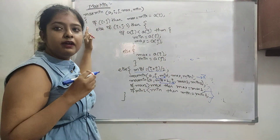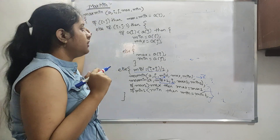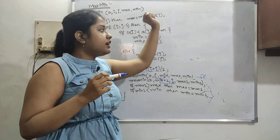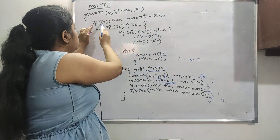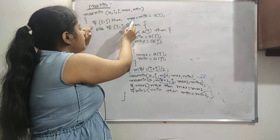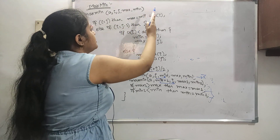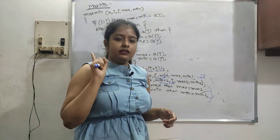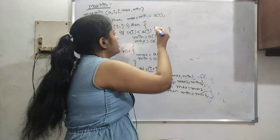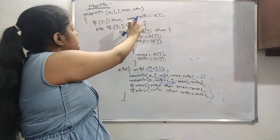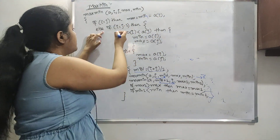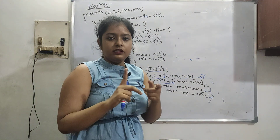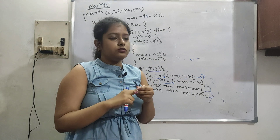Moving on to the algorithm — we have to find the max and mean from an array. The variables are: A, i, j, max, and mean. If i equals j, that means there is one element, so max equals mean equals A[i]. There's nothing more to do in that case.